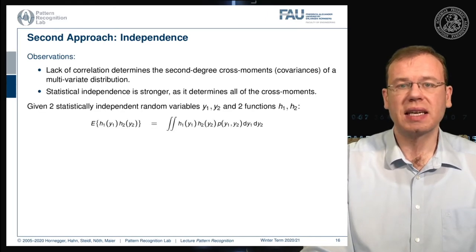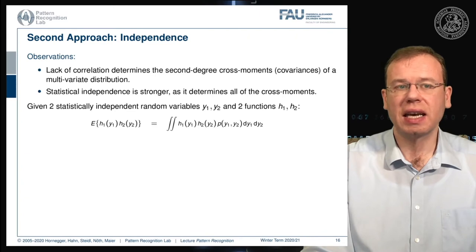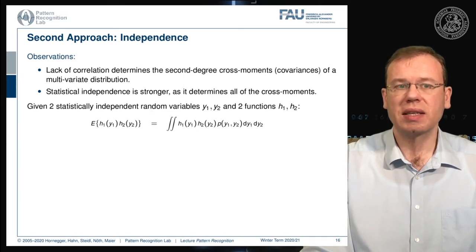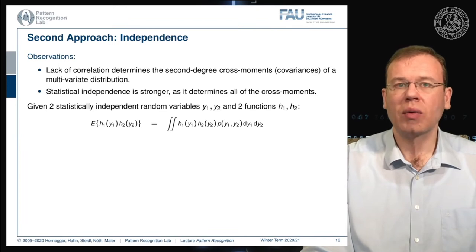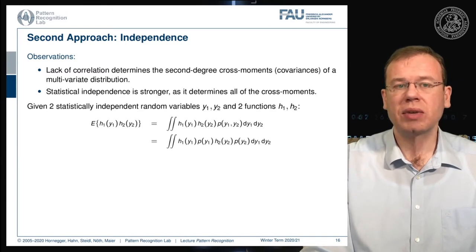If we have two statistically independent variables y1 and y2 and two functions h1 and h2, we can look at the expected value of their product. You could say h1 and h2 represent the mixing, and y1 and y2 are the actual signal sources. We can write this expected value as the double integral of h1(y1) times h2(y2) times the joint probability of y1 and y2.